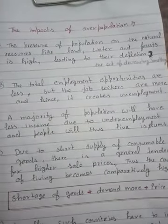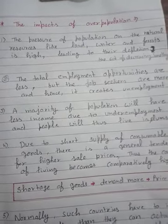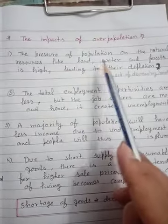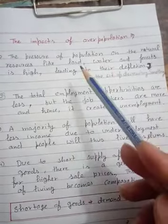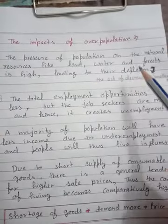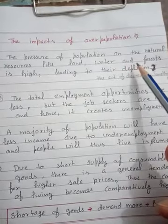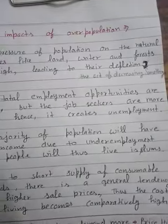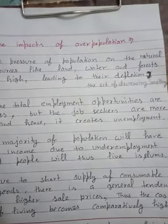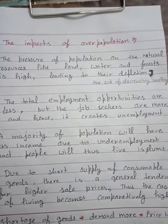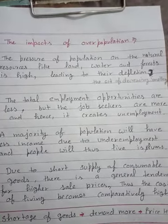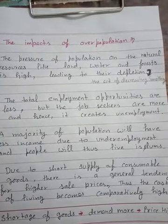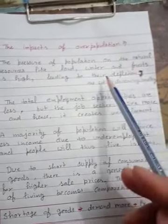Now the most important part: what is the impact of overpopulation? First, the pressure of population on natural resources like land, water, and forest is high. This leads to their depletion — depletion means the act of decreasing something. When population is more and resources are less, pressure on natural resources increases, leading to their gradual depletion.